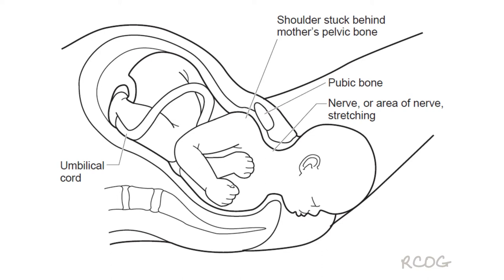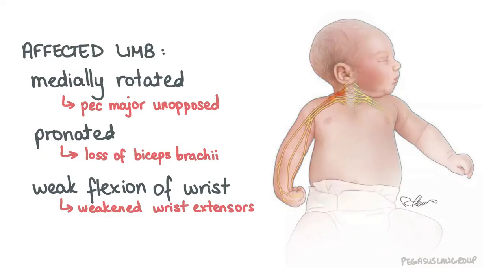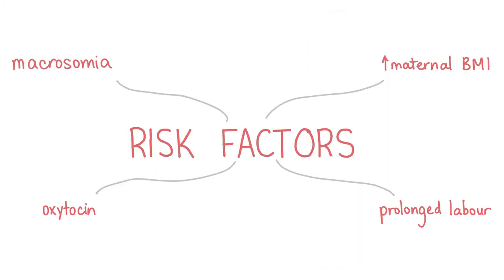Can you remember what deformity results from an upper brachial plexus injury? Erb's palsy, or the waiter's tip position, describes a medially rotated upper limb with pronation of the forearm and weak flexion of the wrist. Risk factors for shoulder dystocia include macrosomia, high maternal BMI, prolonged labour, and augmentation of labour with oxytocin.